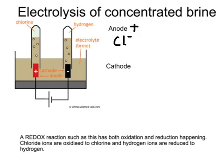Each of those chloride ions needs to lose an electron to form a chlorine atom, but chlorine atoms can't exist on their own — they must come in pairs. So two chloride ions each need to lose an electron to form chlorine gas, which is discharged at the positive electrode, the anode.